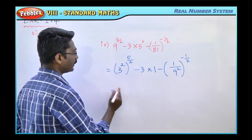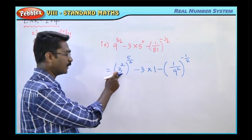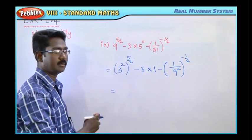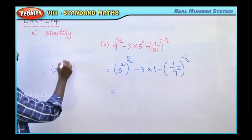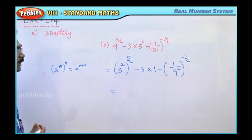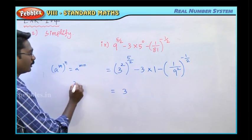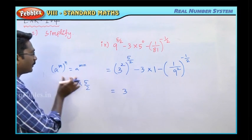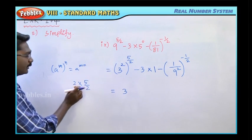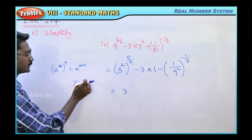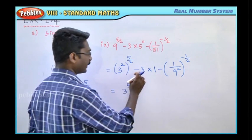Next, we will change 3 power 2, power 5 by 2. We will change power rule, 3 base already power 2, so in the whole number whole power 5 by 2. Power rule: a power m whole power n is nothing but a power m into n. So m is 2, n is 5 by 2, so m into n, power 2 into 5 by 2. Numerator 2, denominator 2 cancel. So total answer 5, that is 3 power 5.